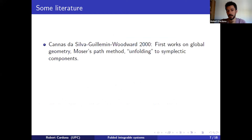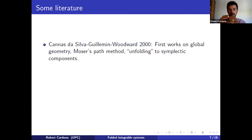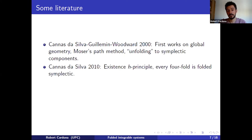Let me mention a few words on the history of folded symplectic manifolds. Cannas da Silva, Guillemin, and Woodward in 2000 were among the first to work on the global geometry: they generalized Moser's path method and explained a folding construction by which you can break a folded symplectic manifold into symplectic pieces. Then in 2010, there was a very nice theorem by Cannas da Silva proving an existence h-principle for folded symplectic structures — which is very interesting because this does not hold in the symplectic case. In particular, every 4-manifold is folded symplectic.